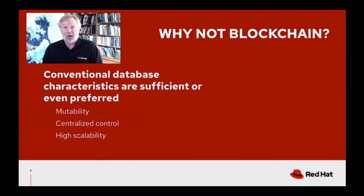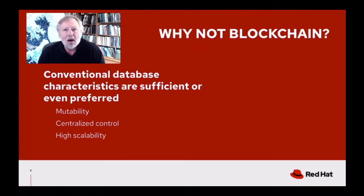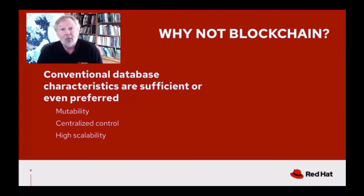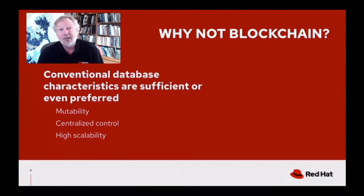But why not blockchain? Sometimes conventional databases are just fine. If you have a single entity in control and suppliers have processes to interact with that entity's database, that may be a perfectly good approach. The advantages of a mutable database you control can outweigh blockchain's immutability feature. And performance continues to be an issue with blockchain — if you have very high-throughput, high-data transaction volumes and the other blockchain characteristics are nice-to-haves but not critical, a database may be better.